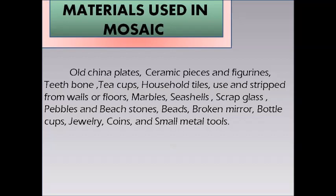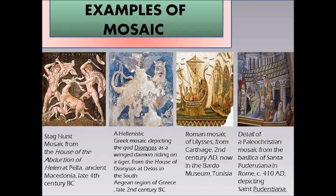Examples of mosaic include: the stag hunt mosaic from the House of the Abduction of Helen in ancient Macedonia, late 4th century BC; a Hellenistic Greek mosaic depicting the god Dionysus riding a tiger from the House of Dionysus in Delos, late 2nd century BC; a Roman mosaic of Odysseus from Carthage, 2nd century AD, now in the Bardo Museum, Tunisia; and a detail of a polychromatic mosaic from the Basilica of Santa Pudenziana in Rome, circa 410 AD, depicting Saint Pudenziana.